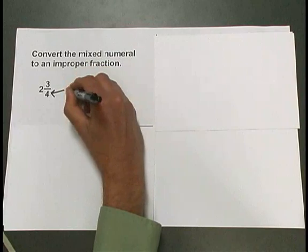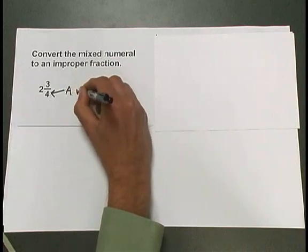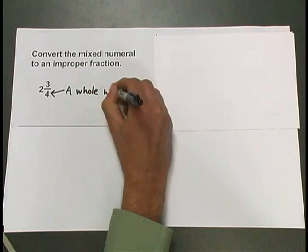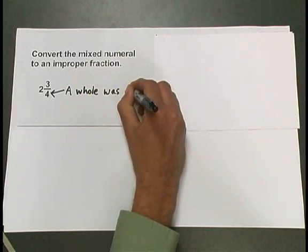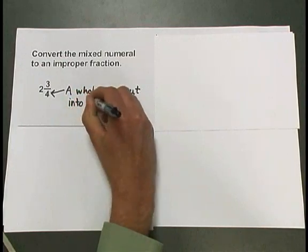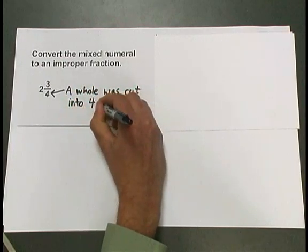The 4 in the denominator tells us that a whole was cut into 4 equal pieces.